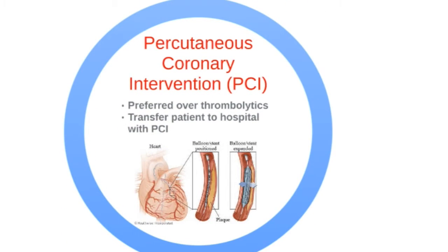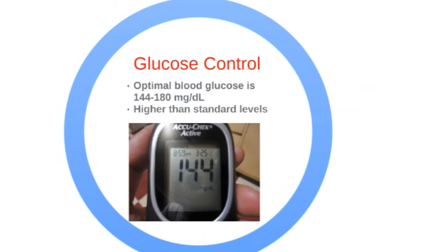Percutaneous coronary intervention, or PCI, is preferred to thrombolytics. The patient should be taken to EMS directly from the hospital, and if the hospital only offers thrombolytics, the patient should be transferred to a center that offers PCI. Be sure to obtain optimal blood glucose for patients with ROSC, which is higher in post-cardiac arrest care than standard levels.